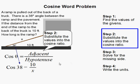So we substitute the 38 degrees here for theta, which is the angle, and 10 feet for the adjacent side. And then this x is for the hypotenuse here.